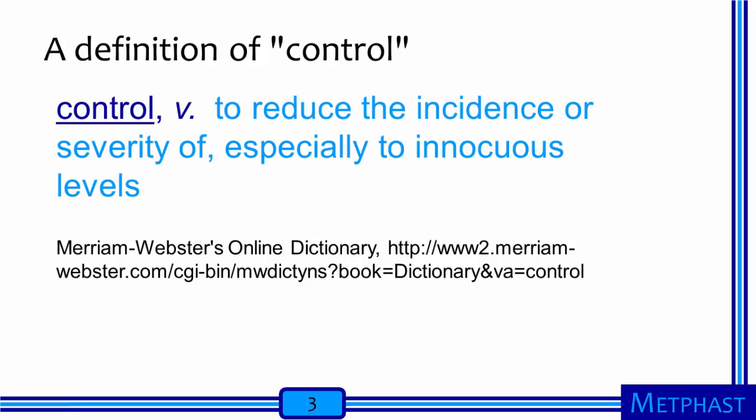Let's start with a definition of control. From Merriam-Webster's online dictionary, the verb form of control can be defined as to reduce the incidence or severity of, especially to innocuous levels. In our case, we want to reduce the severity of exposures to nanomaterials. An innocuous level might be considered the occupational exposure limit. For nanomaterials, there are a few permissible exposure limits from OSHA that might apply, a few nanomaterial-specific recommended exposure limits from NIOSH, and benchmark exposure levels set internally within an organization.